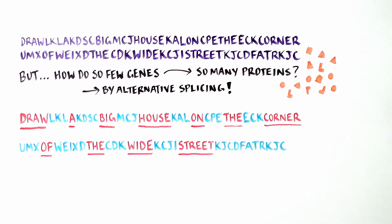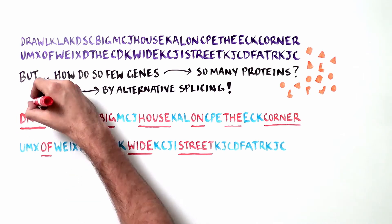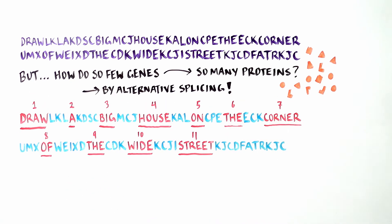There are often many different ways to assemble the exons, just as there are different ways to combine words to form a sentence. Draw a big house on the corner of the wide street. We used 11 exons to form this thought. But these same exons could be combined differently to produce different meanings, the equivalent of different proteins.